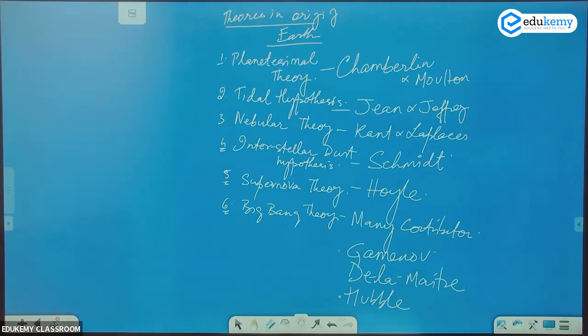Interstellar Dust Hypothesis by Schmidt (S-C-H-M-I-D-T). Supernova theory by Hoyle (H-O-Y-L-E). And Big Bang theory - there are many contributors, which includes people like Gamow, de Maitre (M-A-I-T-R-E), and Hubble.